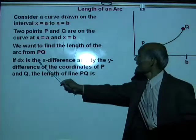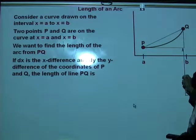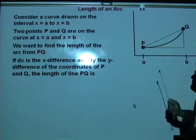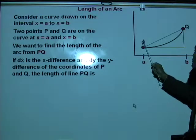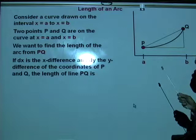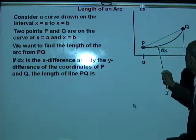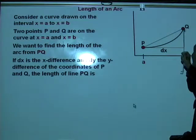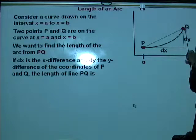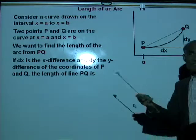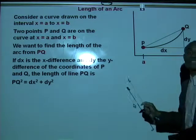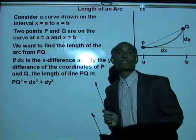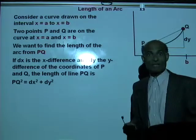Now, if dx is the x difference and dy is the y difference of the coordinates of p and q. If the coordinate of p is x1, y1, and the coordinate of q is x2, y2, then dx is x2 minus x1, and dy is y2 minus y1. And the straight line distance pq is such that pq squared equal to dx squared plus dy squared. That's the Pythagorean theorem.